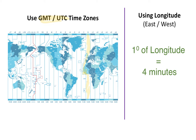If we are plus two, we're two hours ahead of that location. If we are minus three, we're three hours behind that zero time zone. Also remember that we have the international date line — if we are travelling over that, we're going to have a change of day.